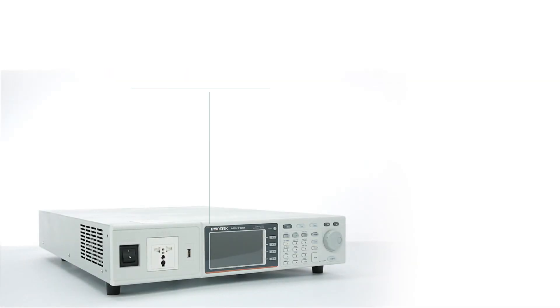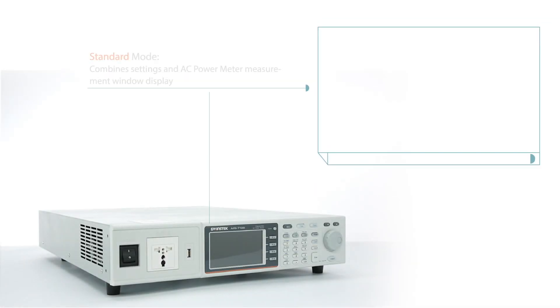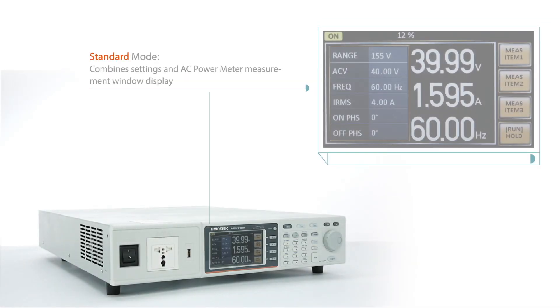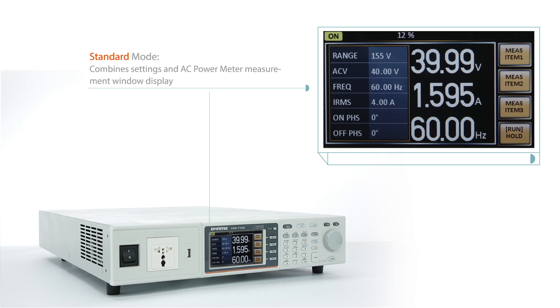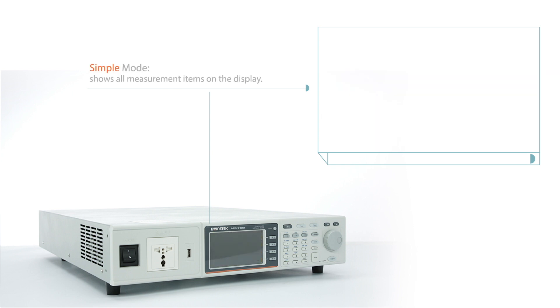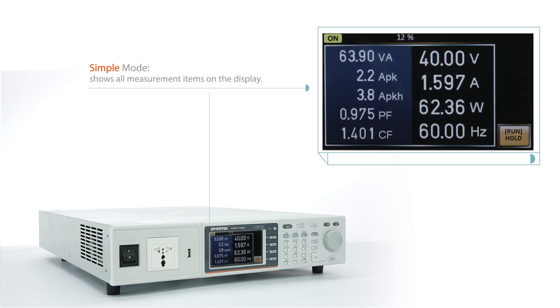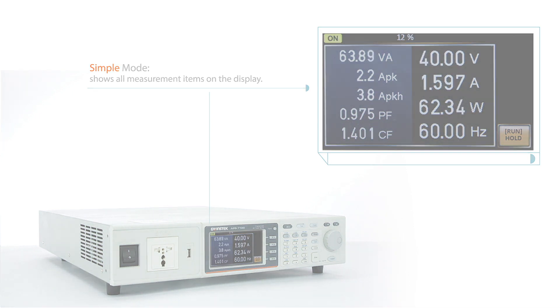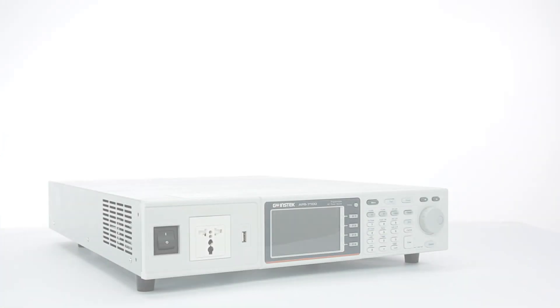There are two control panel modes. Standard mode combines settings and AC power meter measurement window display. Simple mode shows all measurement items on the display.